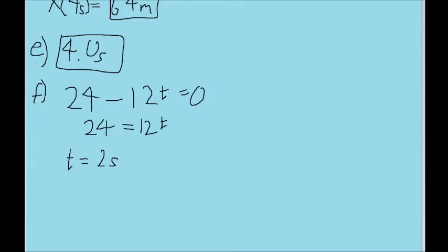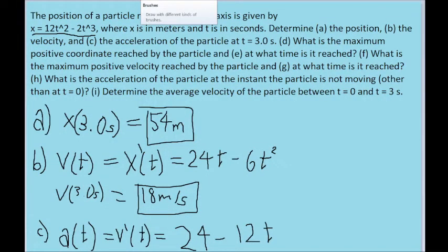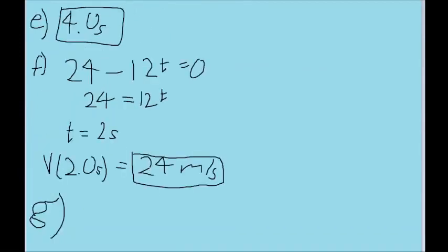Now in order to find the velocity at this point in time, we'll just plug 2 seconds into our velocity function, and this gives us 24 meters per second. Part G asks for the time at which this velocity is reached. And much like part E, this part's just kind of mindless because it was one of the preliminary steps anyway. So we'll just put down 2 seconds for this and call it a day.